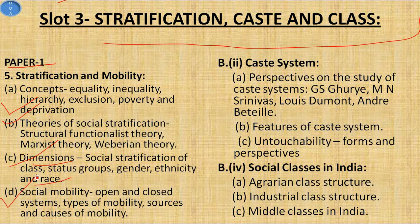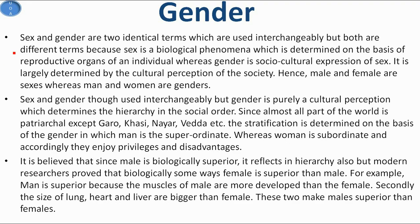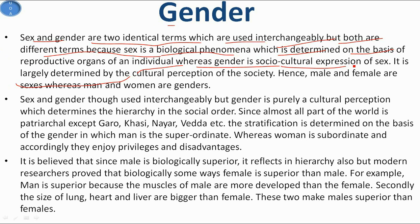In this video, first we see gender. Basically, sex and gender are two terms which are used interchangeably, but both are different. Sex is a biological phenomenon which is determined on the basis of reproductive organs of an individual, whereas gender is the socio-cultural expression of sex - it is largely determined by the cultural perceptions of society. Hence, males and females are sexes, whereas men and women are genders.